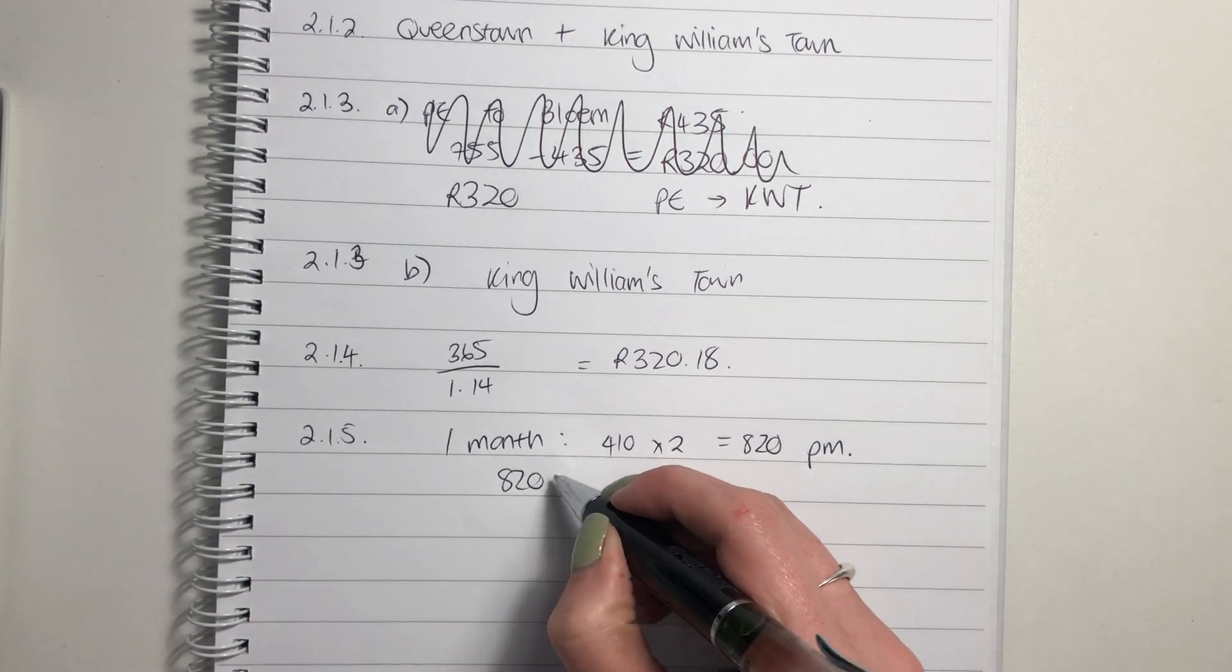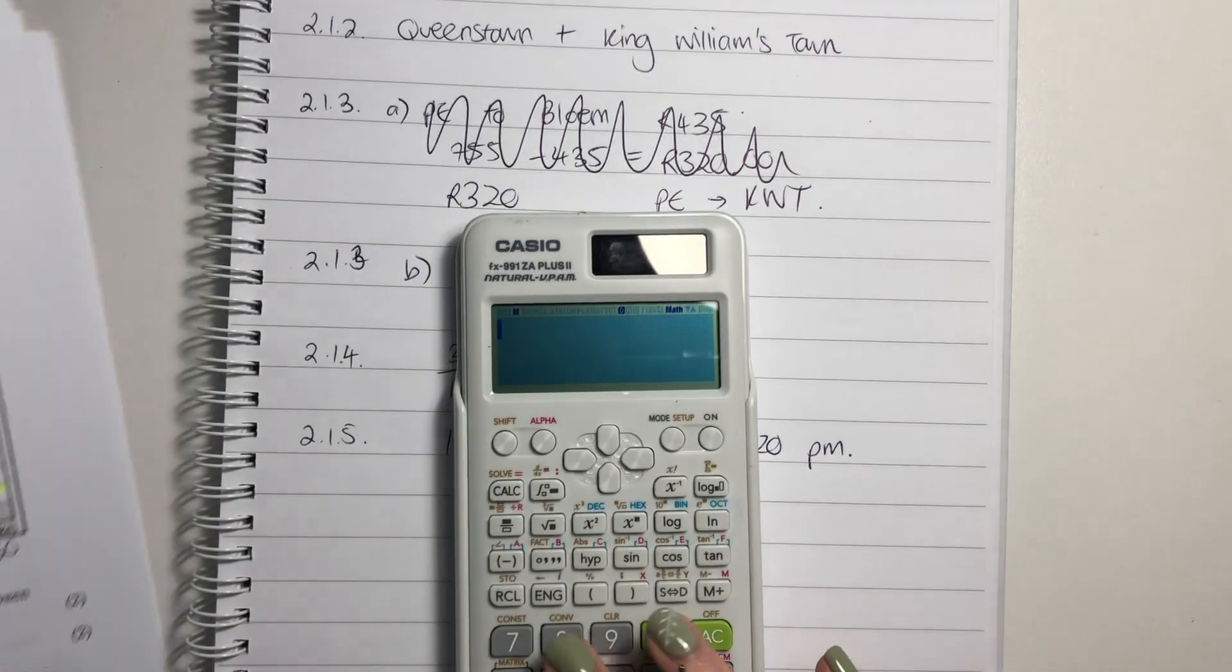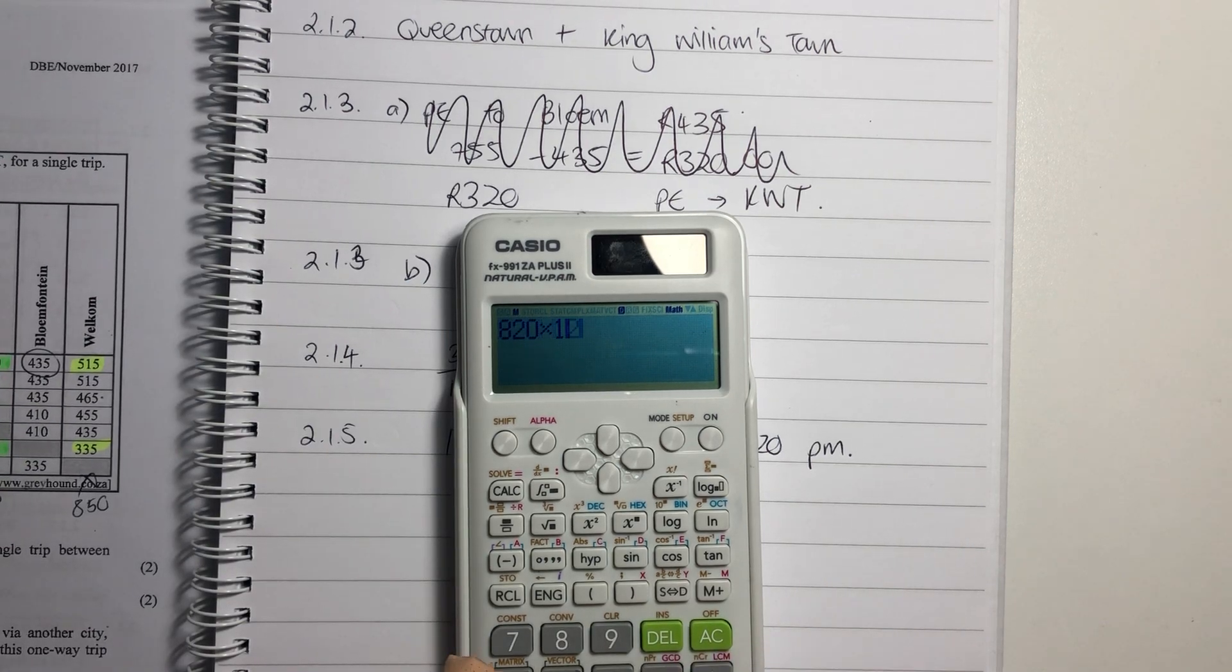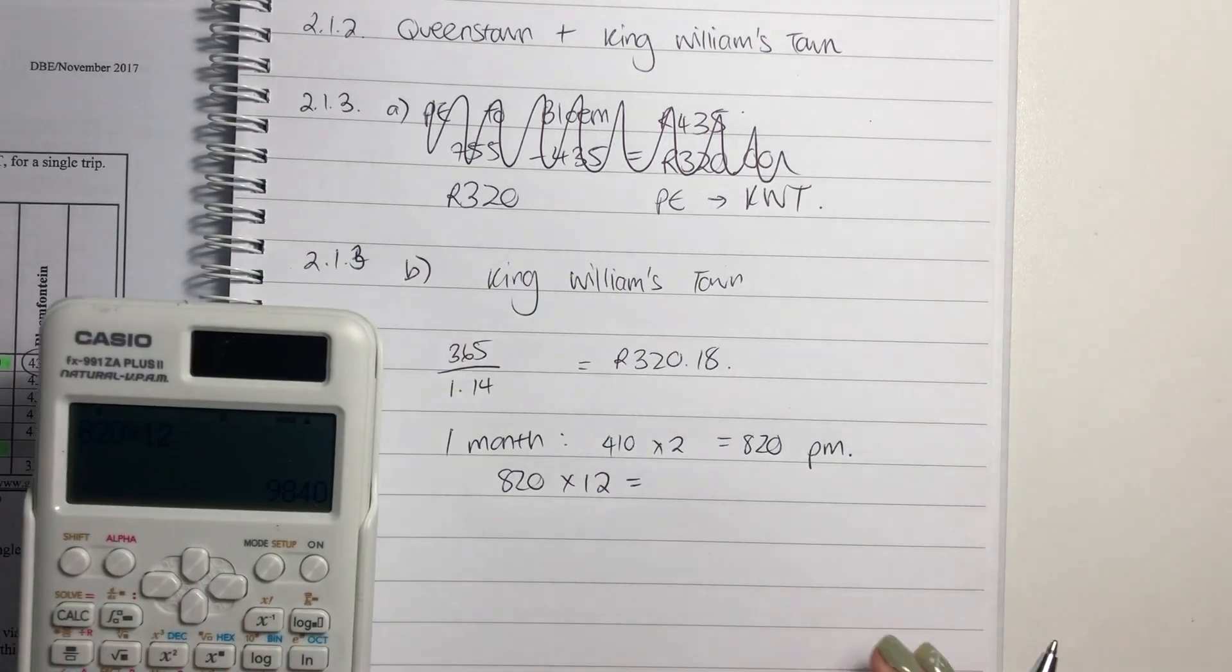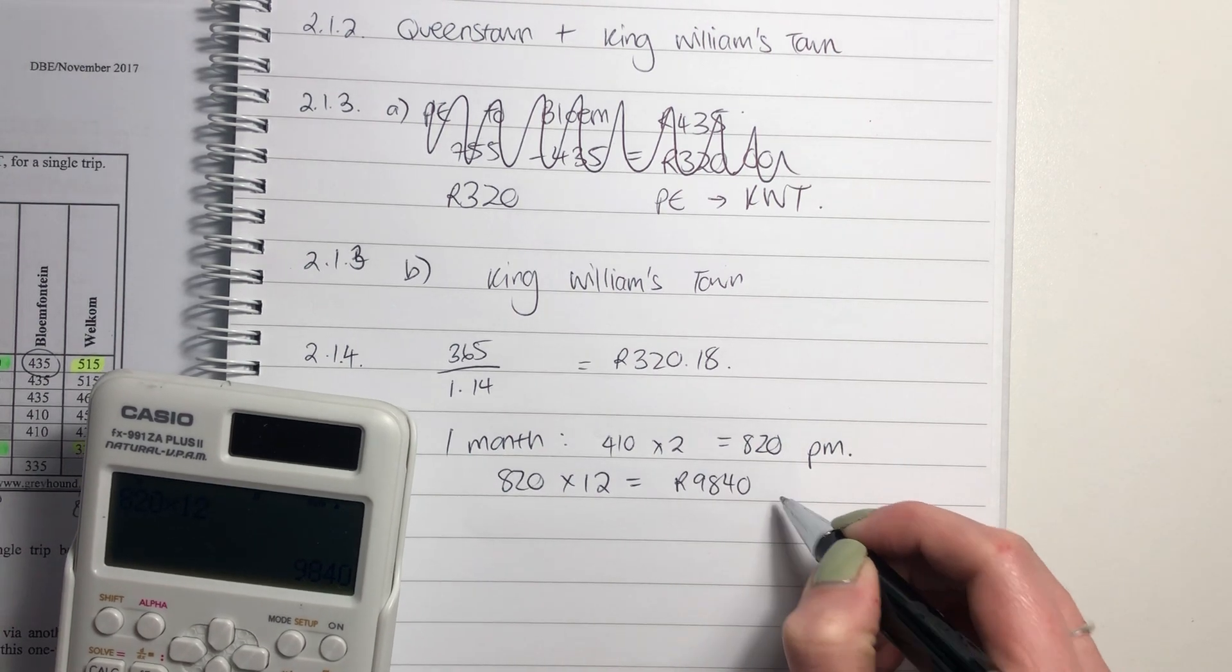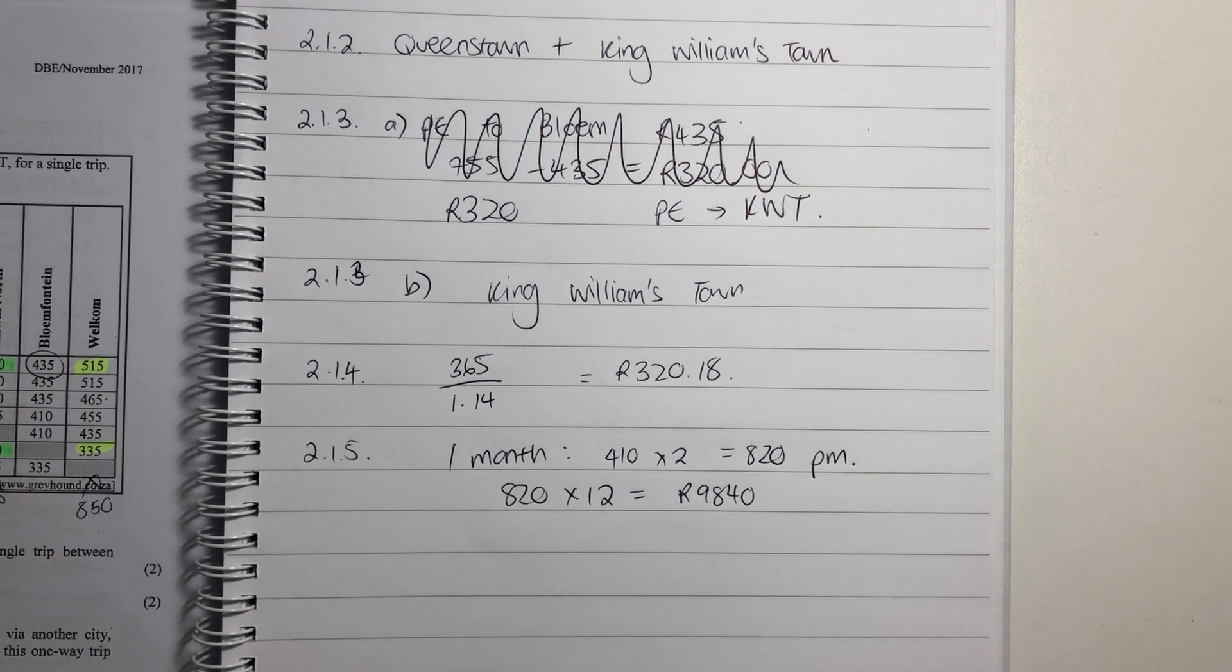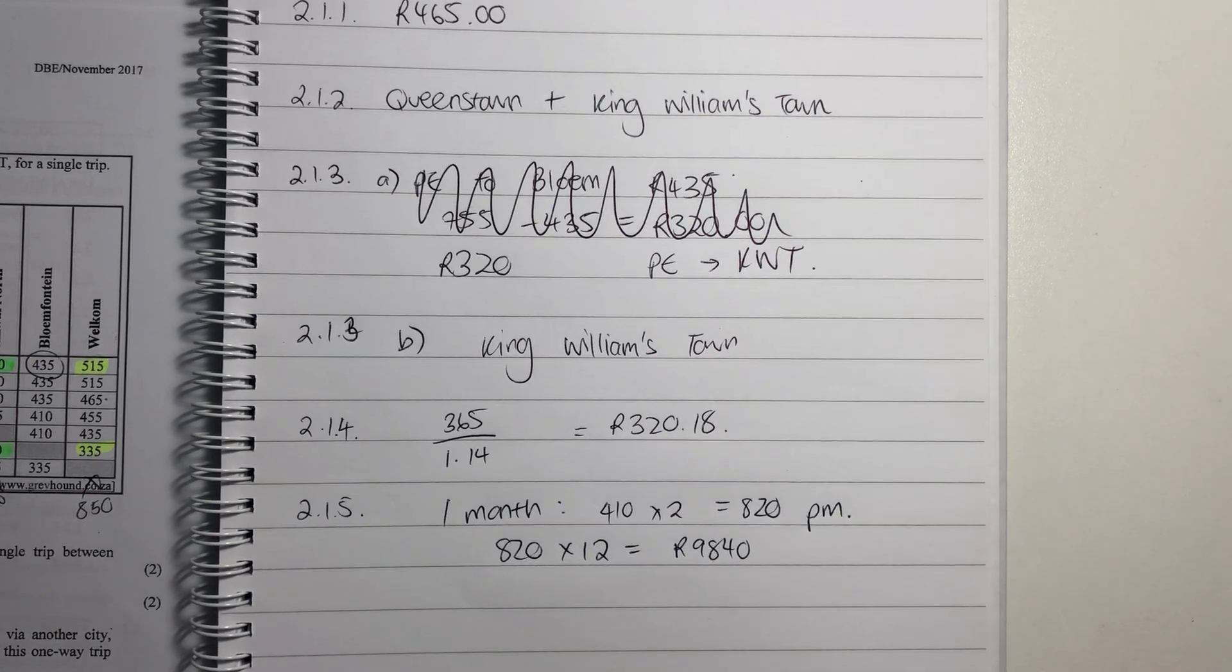But they didn't ask it for per month. They ask it for a year. So you say 820 times by 12. Put that in your calculator, 820 times by 12. And your total cost there is 9,840 for one year. And that is your final answer. I'm going to start another video for the second half of this. But I hope you're following nicely through this paper. It's quite a reasonable paper thus far.